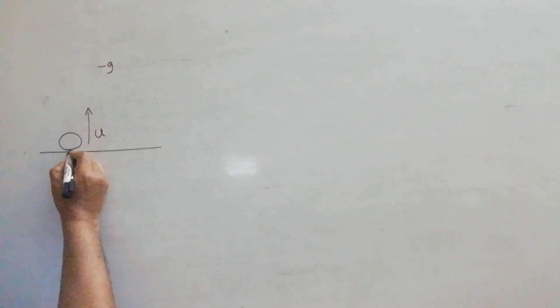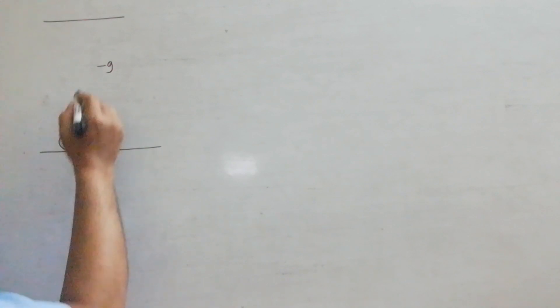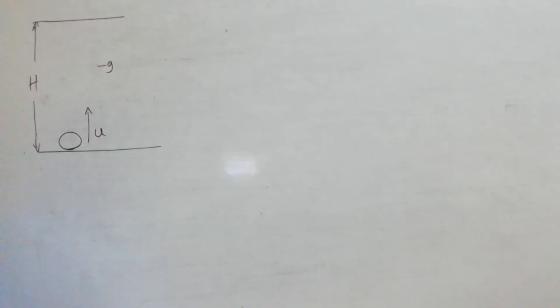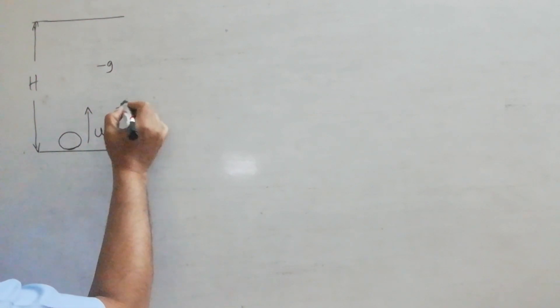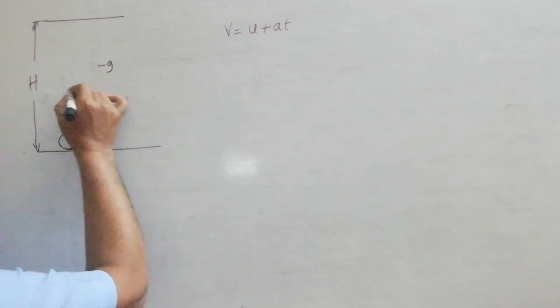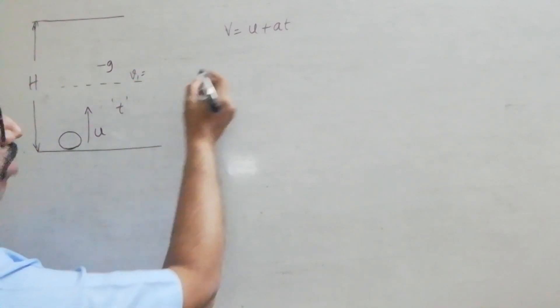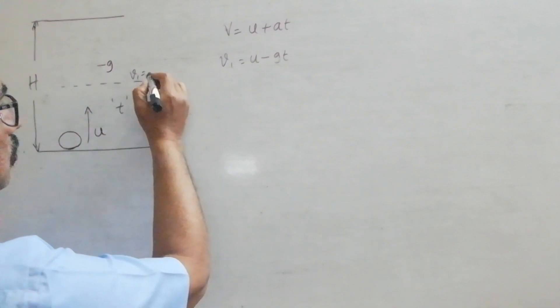Now depending on the velocity with which it is projected, it may reach some maximum height. Let H be the maximum height reached by the body. As it starts with an initial velocity U, suppose it travelled for a small interval of time T, then we have the basic expression V equal to U plus AT. After T seconds, suppose the body is at some height; then at this height its velocity will be V1, where V1 equal to U minus GT.